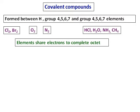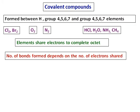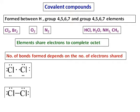The number of bonds formed between elements depends on the number of electrons they share. For example, consider Cl and Cl — they share one electron each, meaning there are two electrons between the two Cl atoms, and hence a single bond is formed.